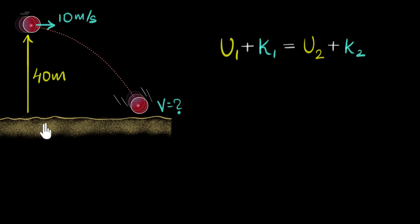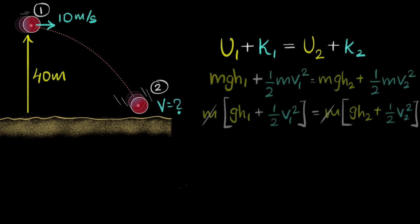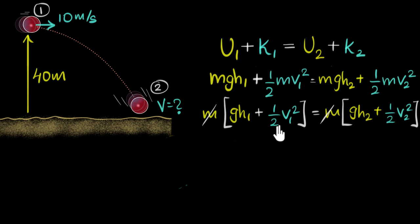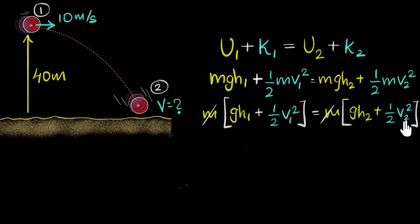Let's call the starting position point one and the ground position point two. H₁ is 40 meters, V₁ is 10 meters per second, H₂ is zero — the ball is just about to hit the ground — and V₂ is what we want to calculate. So let's substitute and solve.